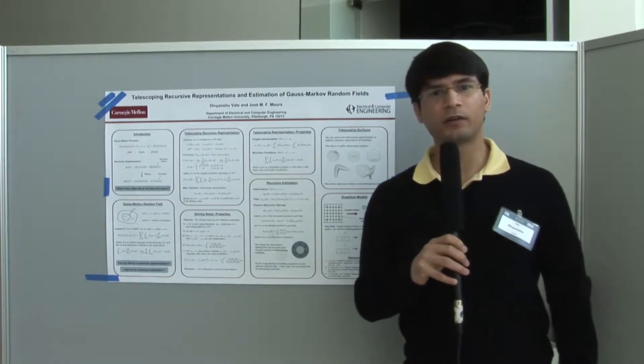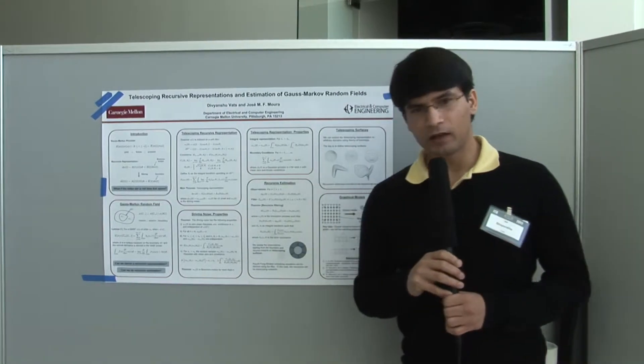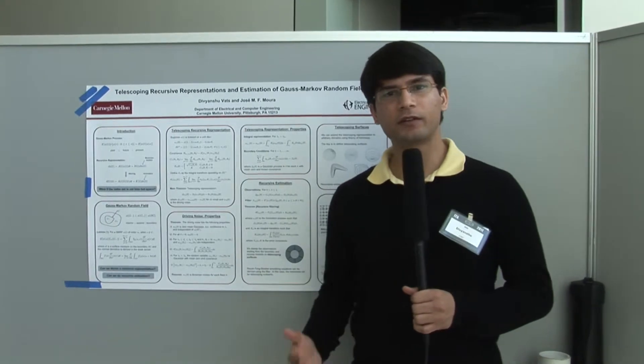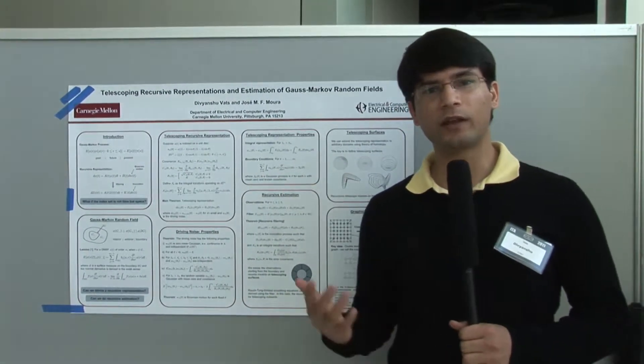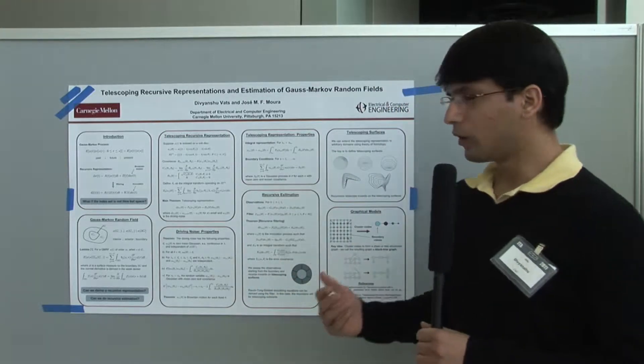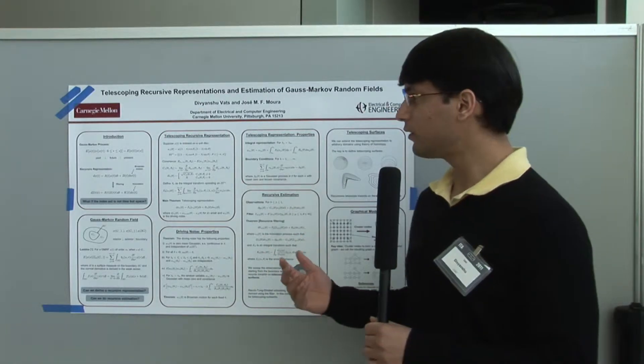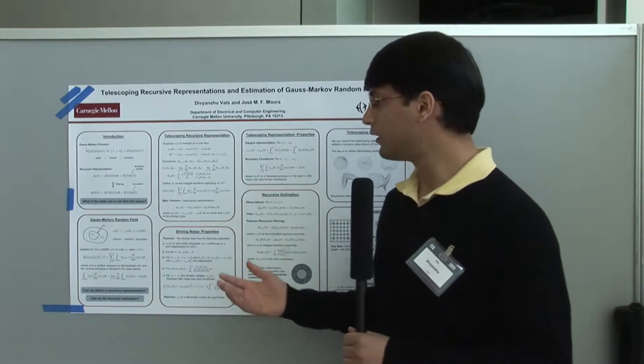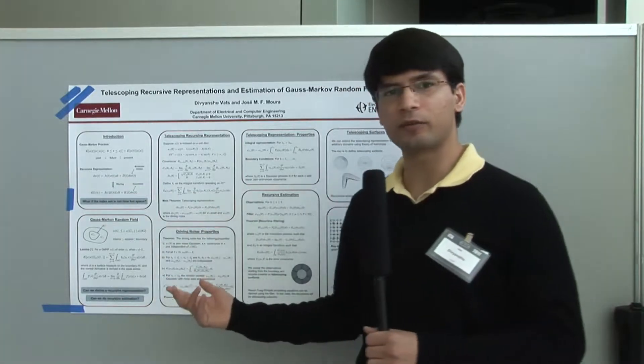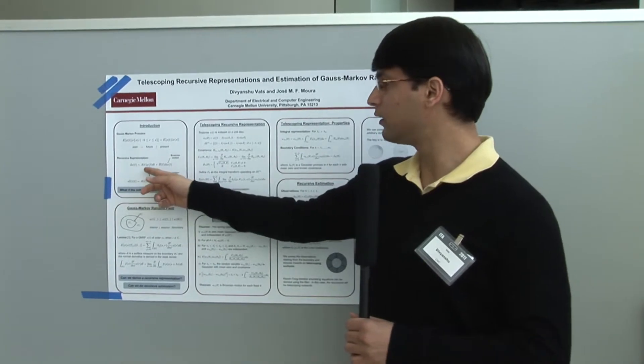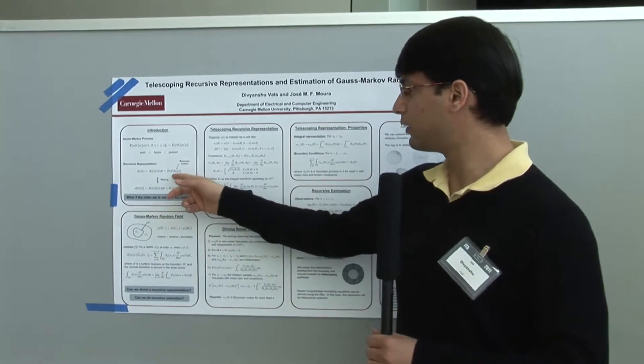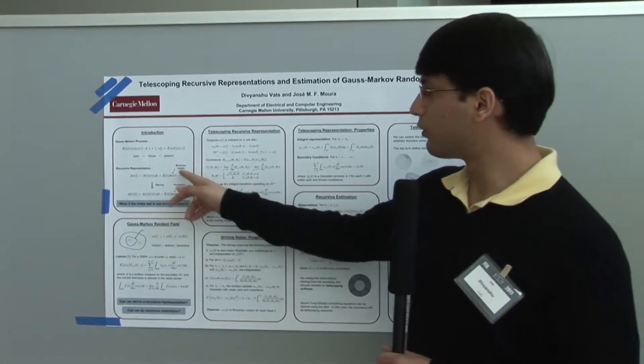I'm a PhD student at Carnegie Mellon University. The general theme of my research is studying recursive representations for random fields. It's well known that for random processes, if you assume Markovianity, you can get a recursive representation like a state-space representation: dxt equals axt plus bt dwt, driven by